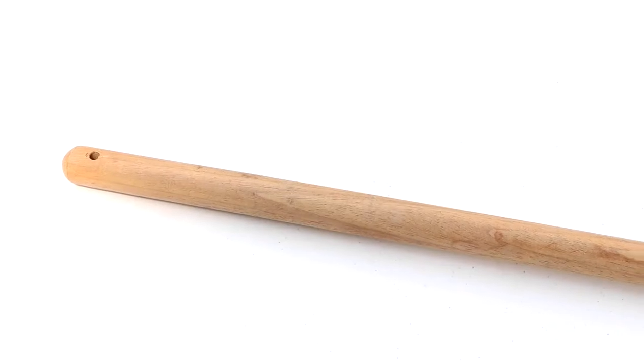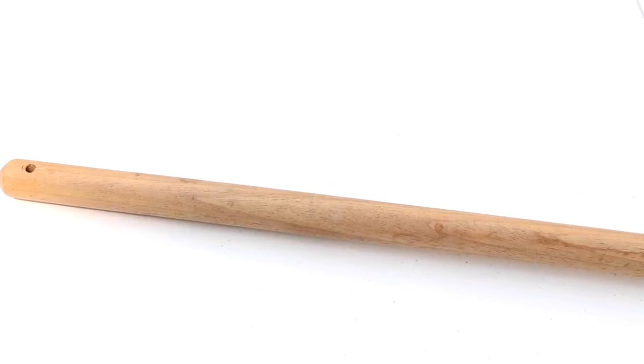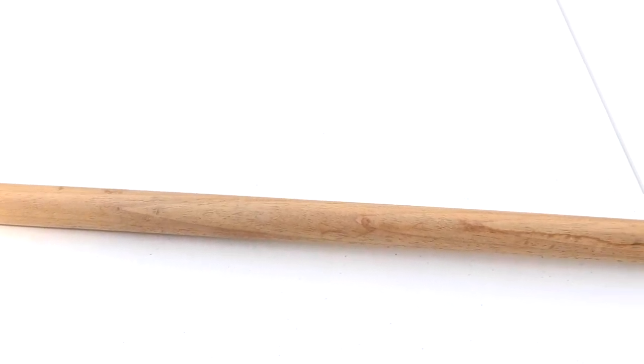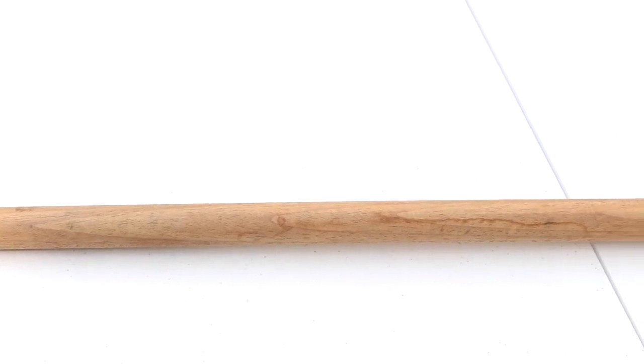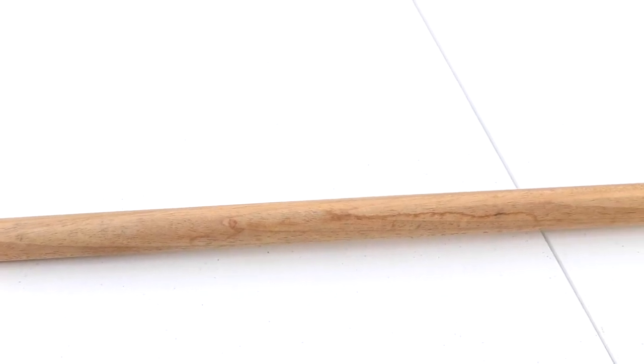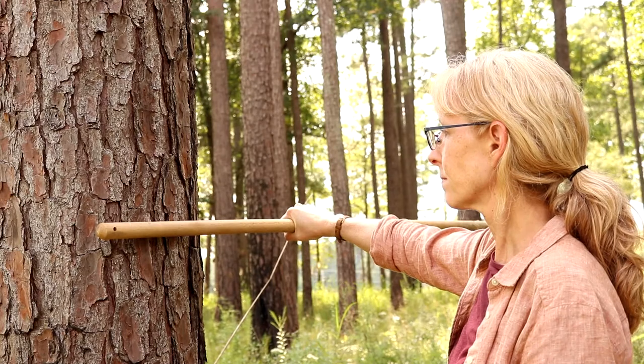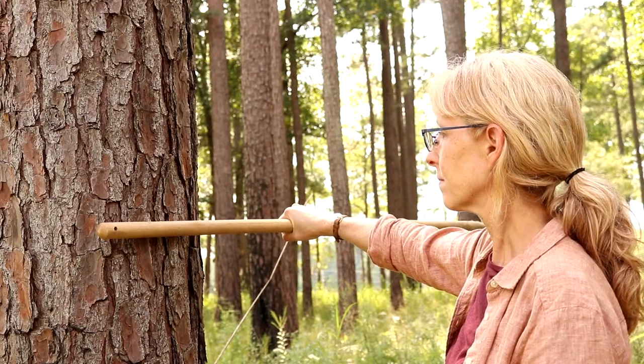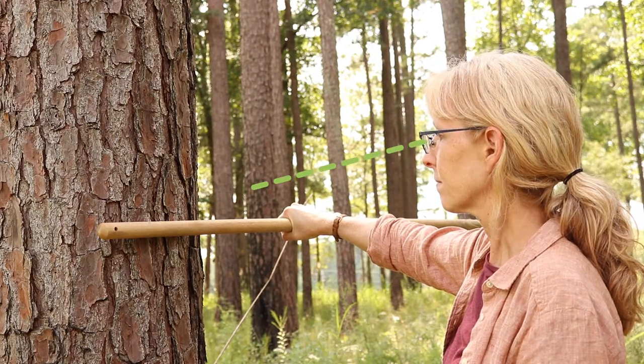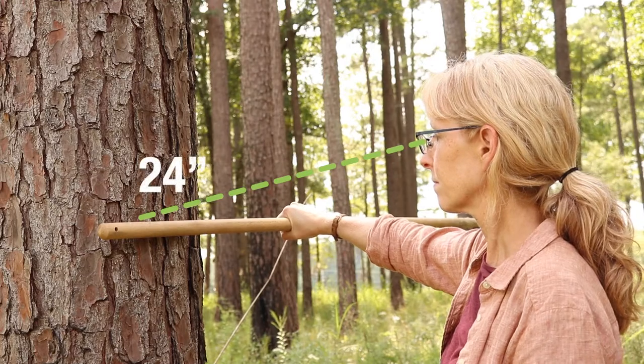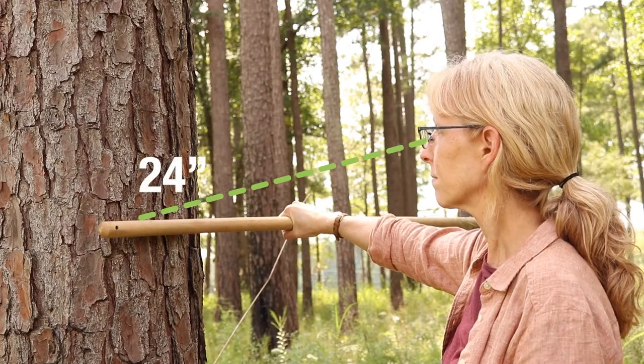To make your own Biltmore stick, first obtain a broom handle or large dowel or other blank that can be used. Then, holding the blank comfortably against the face of a tree at about 4.5 feet above the ground, have someone carefully measure the distance from your eye to the blank. This is your personal arm reach for creating your Biltmore stick.